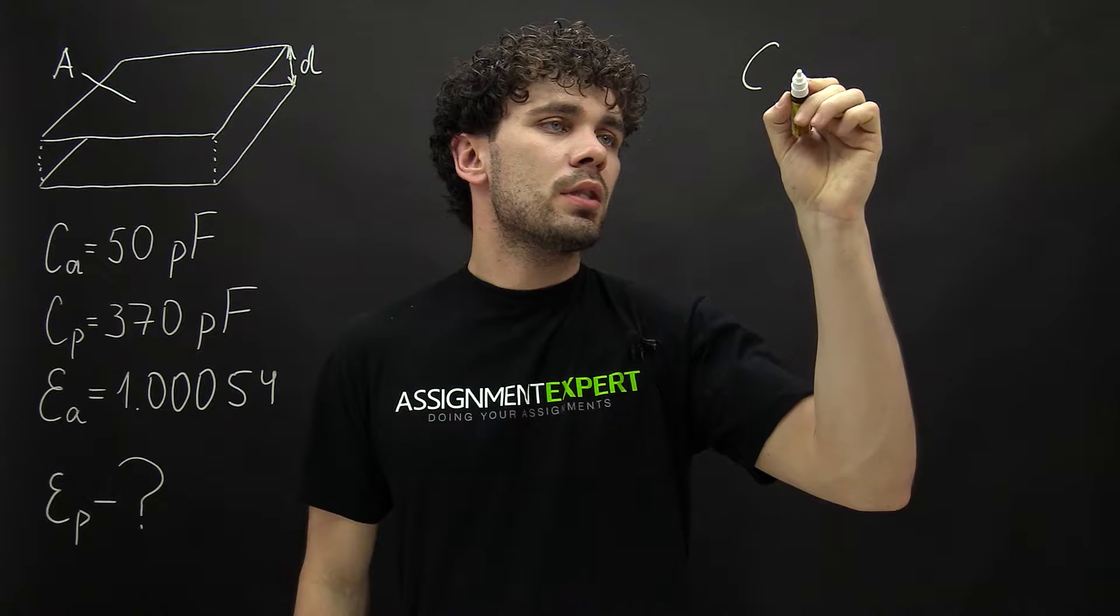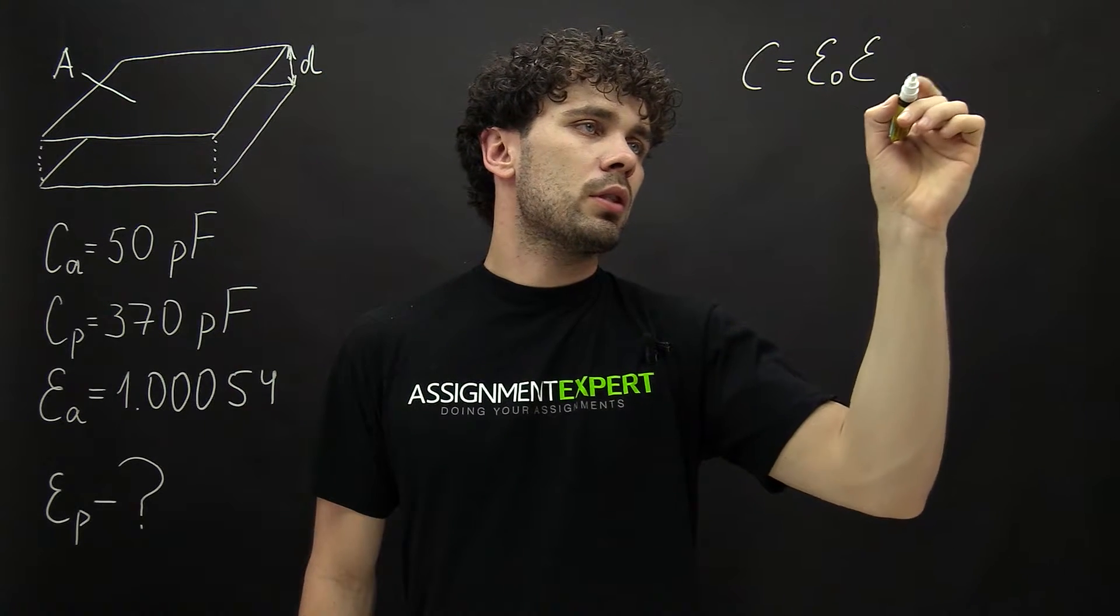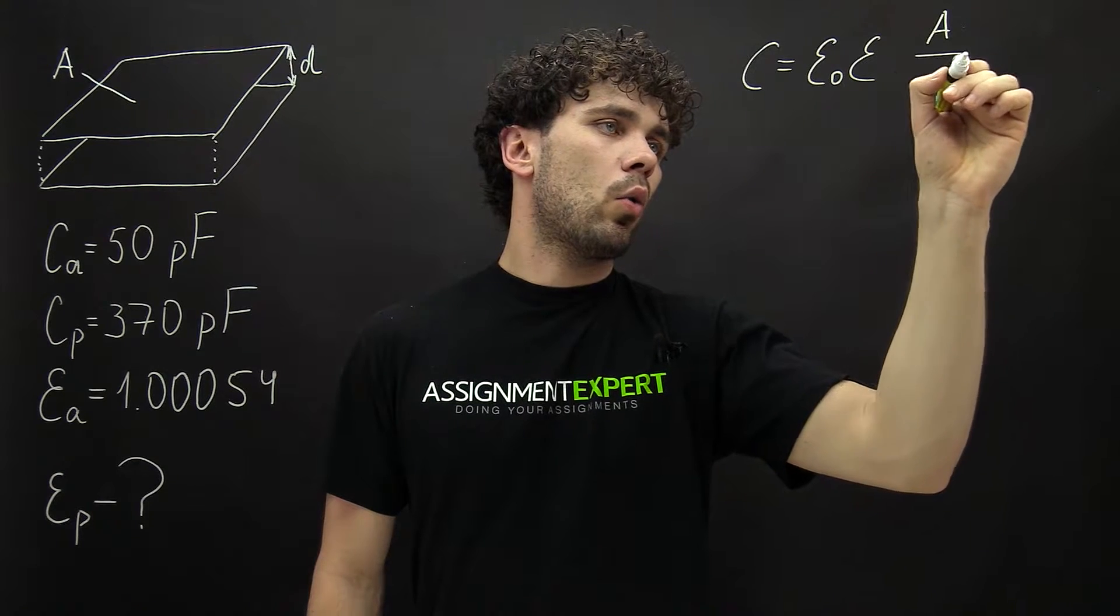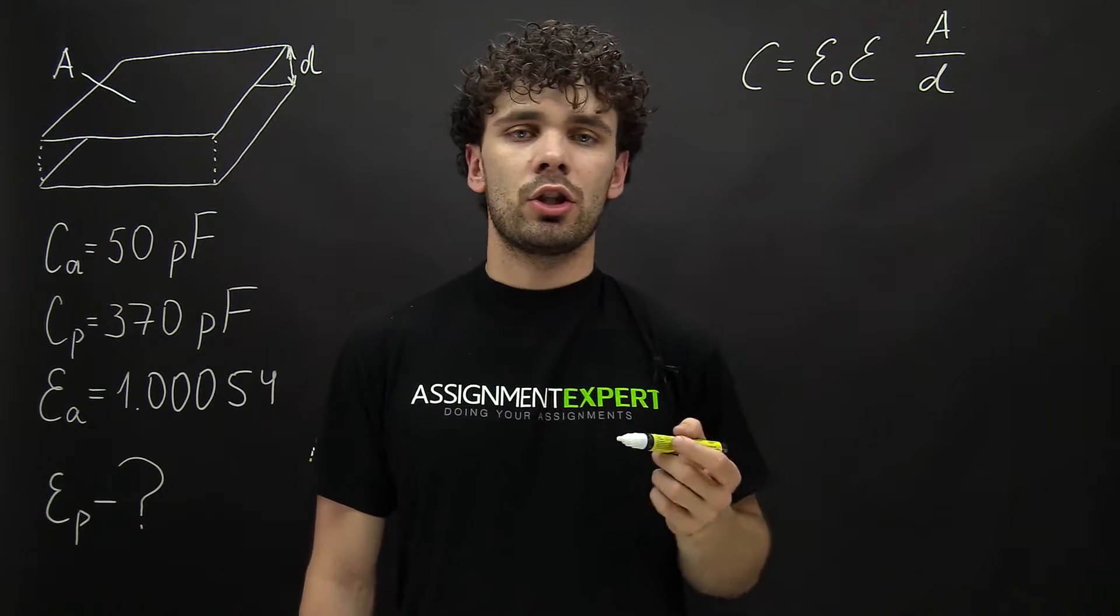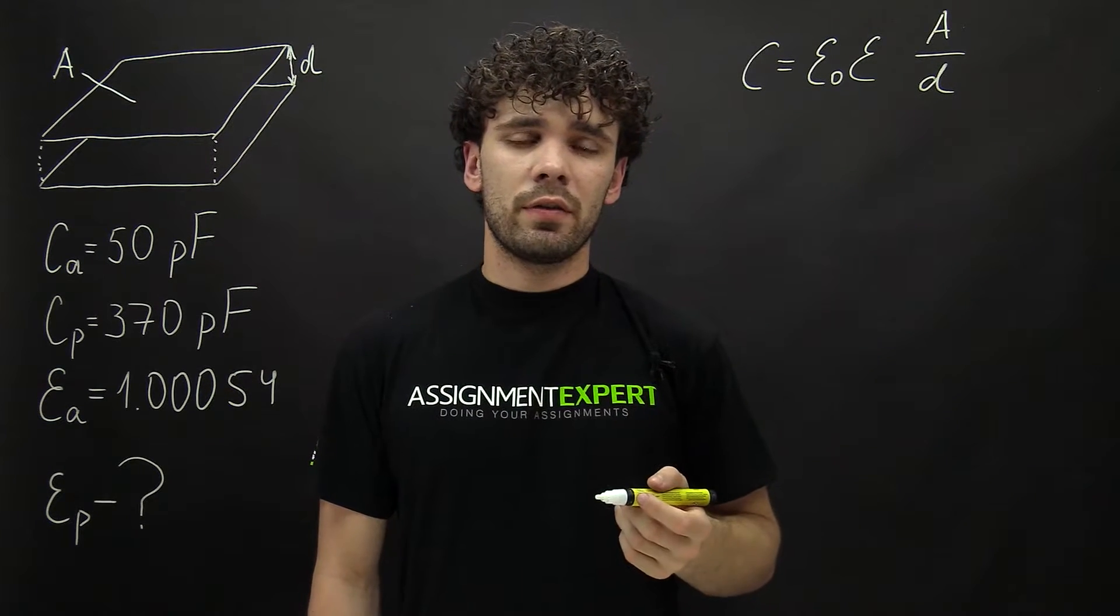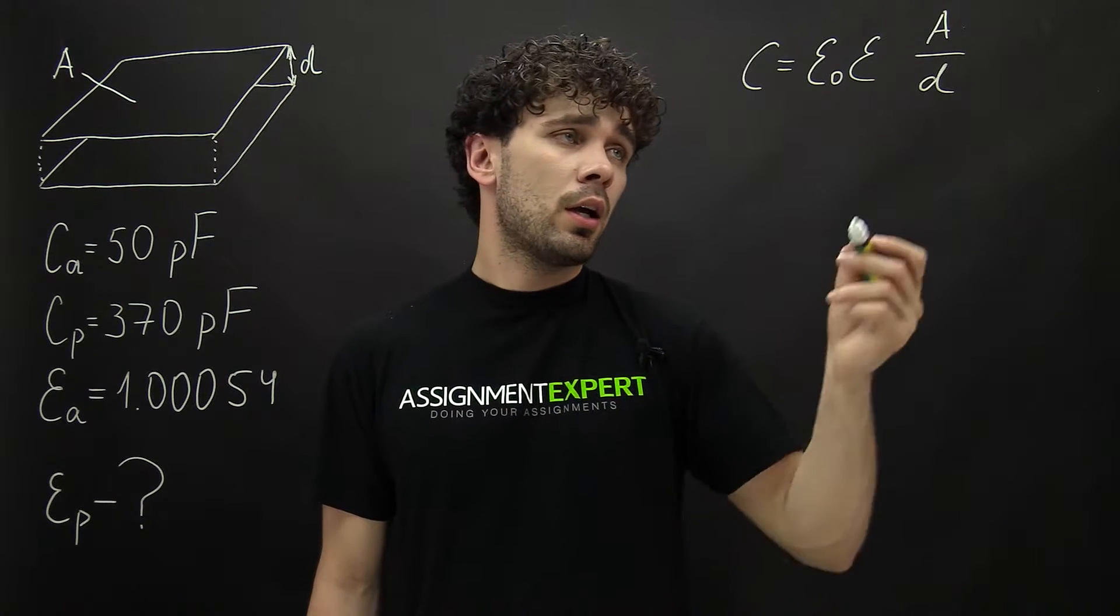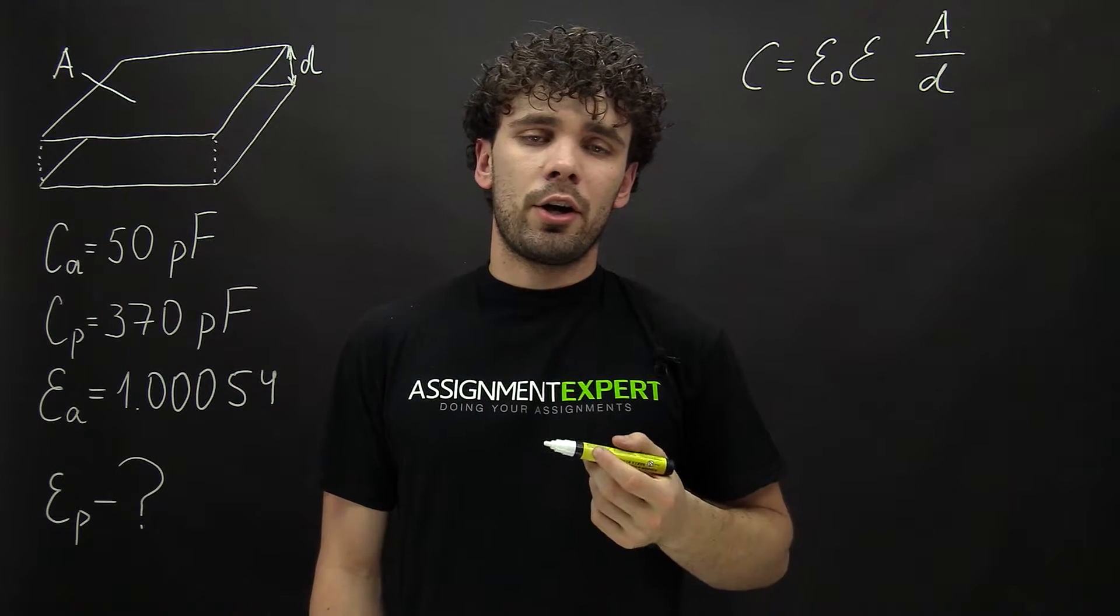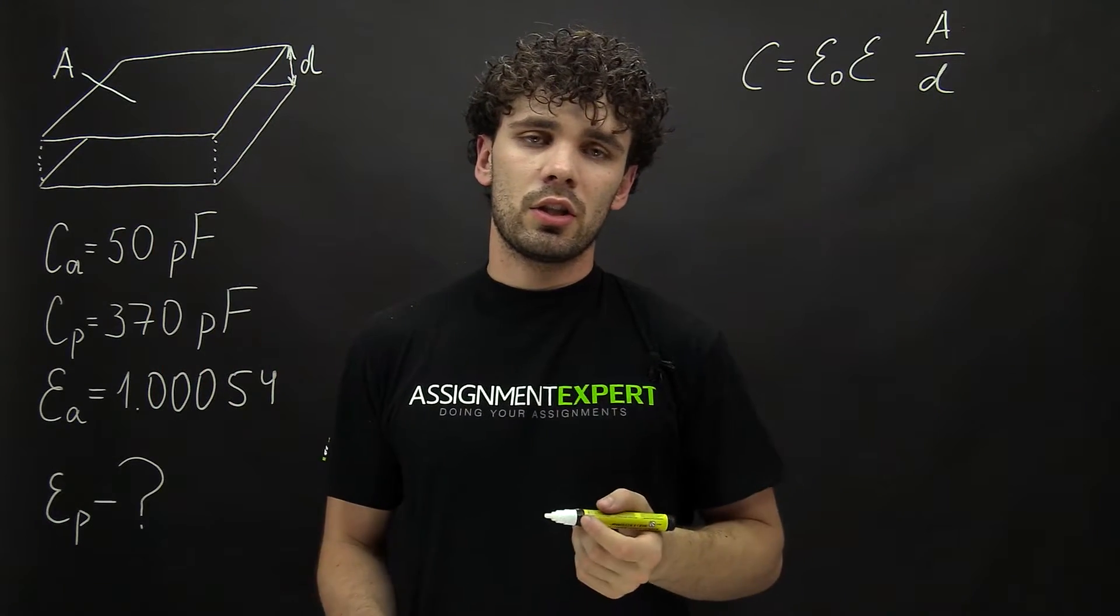It goes like this: C equals ε0 times ε times A over D. Here C is the capacitance, ε0 is the permittivity of free space, ε is the permittivity of dielectric medium or dielectric constant, A is the overlap area of the plates, which is this, and D is the distance between the plates.